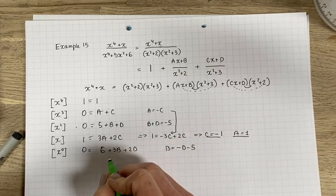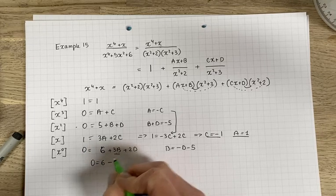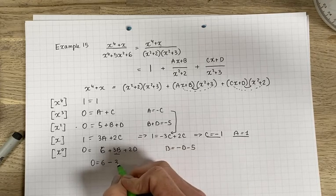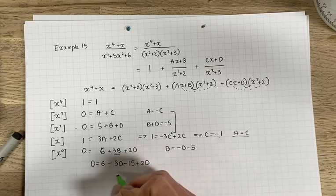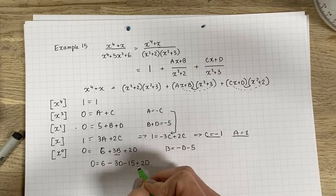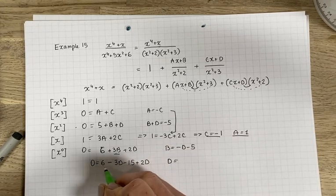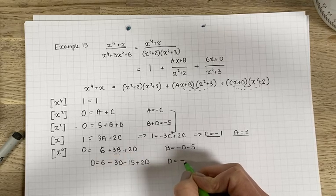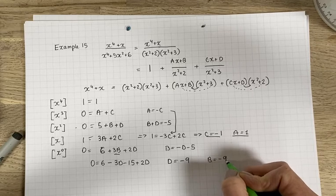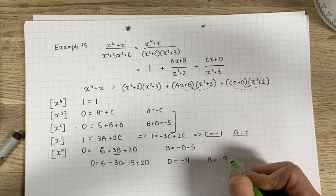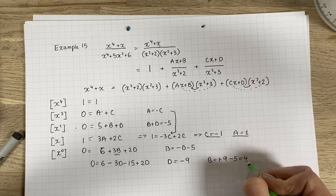So if I sub it into this, I will have 0 is equal to 6 minus 3 times, 3d minus 15 plus 2d. So rearranging that gives me 2d minus 3d. So minus d, move it on the left hand side is d. 6 take away 15 is minus 9. And b is going to be minus 9 minus minus 9. So plus 9 minus 5 which is 4.